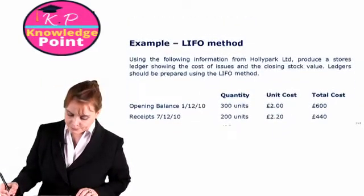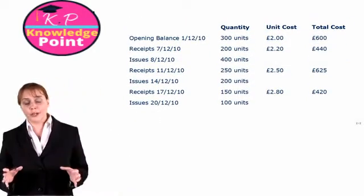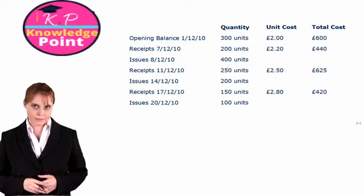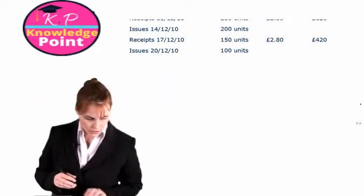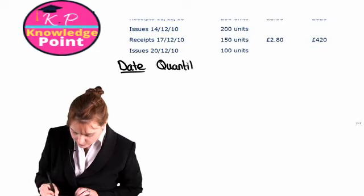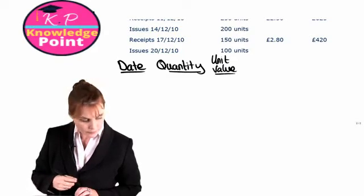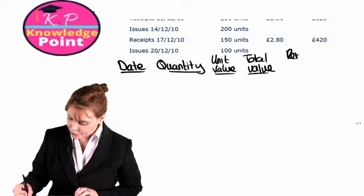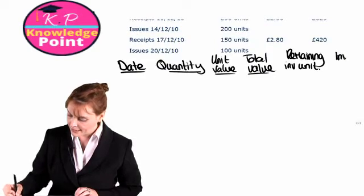Looking at our example again, we have the same information in relation to Holly Park Limited, and we are going to go through it in the same way as the last session, this time using our LIFO method. We need our table again: date, quantity, unit value, total value of that transaction, remaining inventory units, and our remaining inventory value.